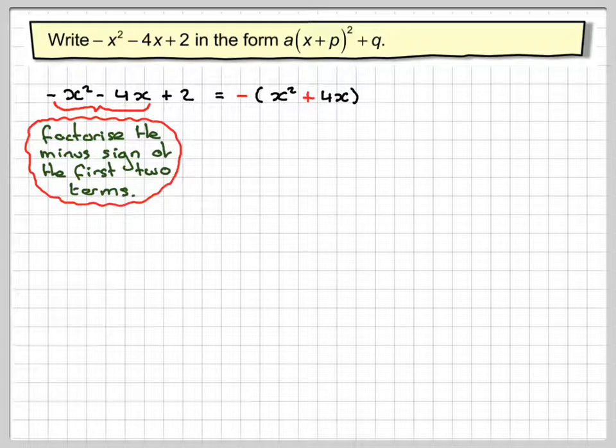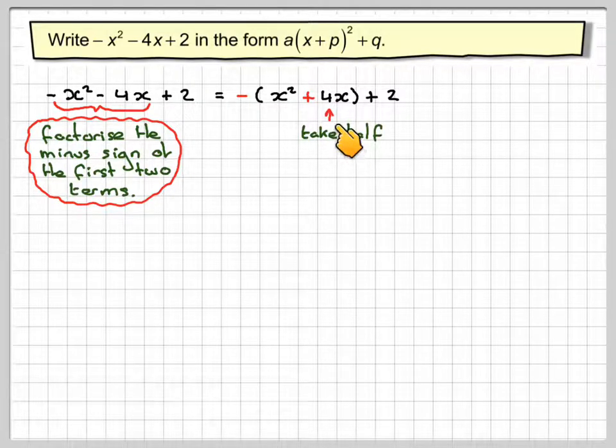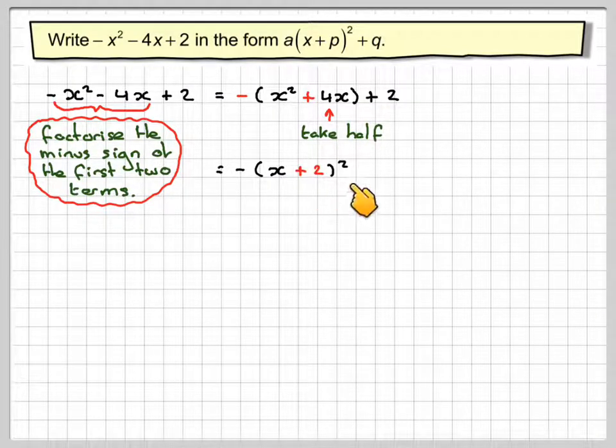Now we'd proceed like we'd done before. Sorry, there's plus 2 on the end. Now we'd proceed like we'd done before. We would take half of this number here which is 4. And we're going to write down -(x + 2)² + 2.